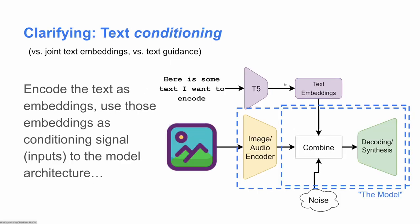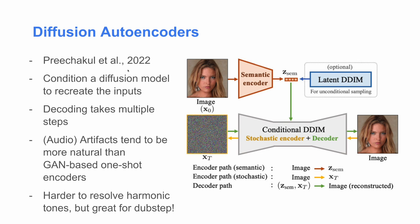When we're talking about text conditioning, we take our text embeddings — whatever they might be — and use those as direct inputs connected to the model as a conditioning signal on some kind of encoder-decoder architecture, potentially with noise added as well. The model takes these inputs and outputs our audio or images. For diffusion autoencoders (Preechakul et al.), we condition the diffusion model to recreate its inputs — we've got some noise, the model takes it in and puts it back out. The decoding takes multiple steps. When we do this with audio, we do get artifacts, but they tend to sound more natural than GAN-based one-shot encoders.